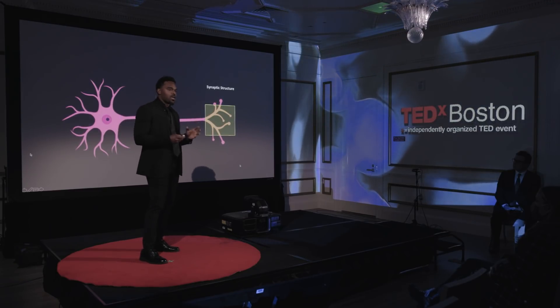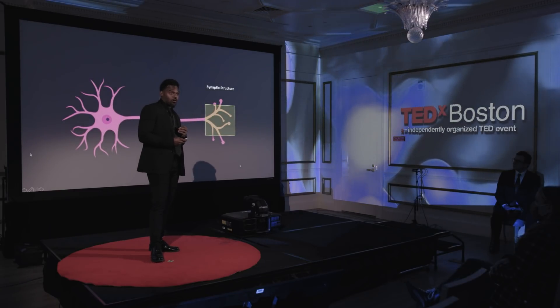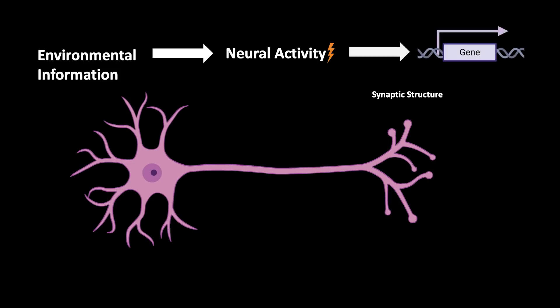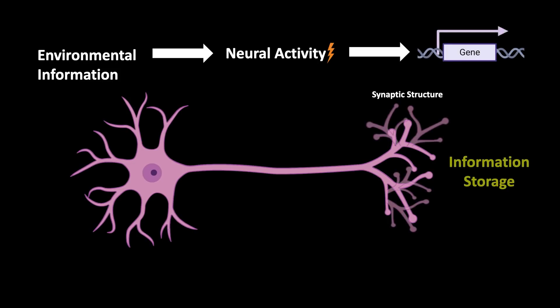Synaptic structure is interesting and important because it's essentially a biological hallmark of the vast and amazing potential that dwells within us all. This rings true in the context of memory when we consider that the environment is a particular kind of information that gets coded and represented in the nervous system as neural activity, which dynamically directs gene expression to store that information by modifying synaptic structure. This is important because it allows us to remember those experiences that would otherwise wane into obscurity.